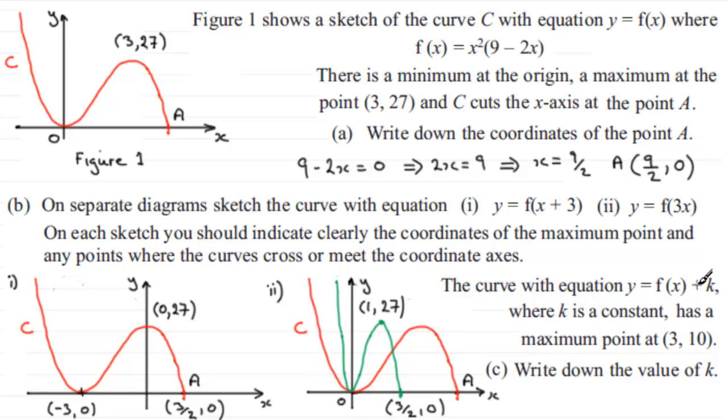If it's plus k it shifts it up by k units; if it's minus k it shifts it downwards by k units. If our new graph has a maximum point at (3, 10), that's clearly vertically below (3, 27), down here somewhere. What have I got to do to this graph to translate it downwards to the point (3, 10)? If we take that graph and pull it down till it's at (3, 10), I've got to pull it down by 17 units. Therefore, for this graph to come down to (3, 10), k must be minus 17. So k equals minus 17.